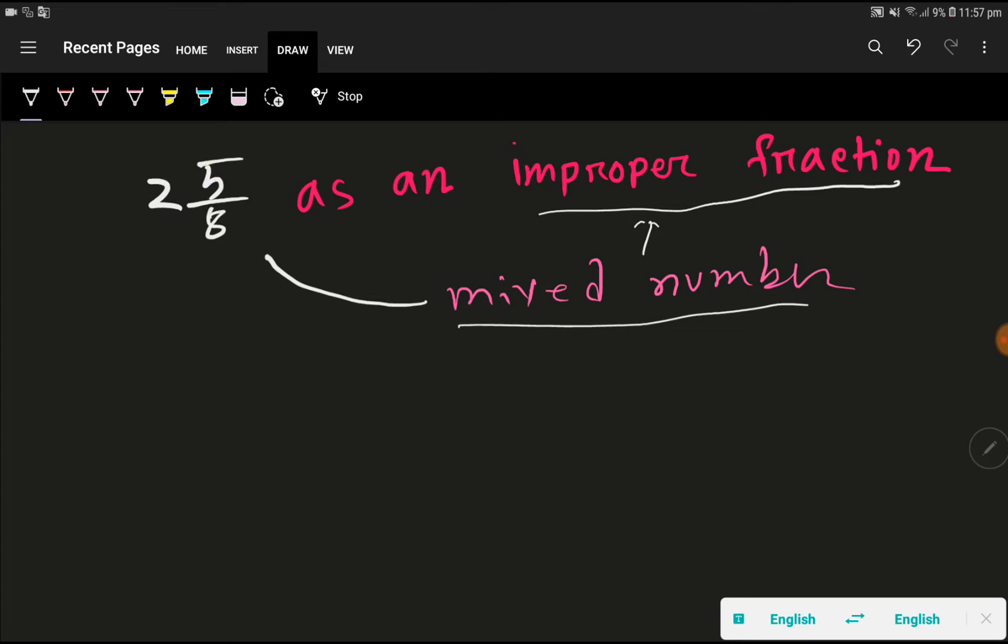To convert this mixed number to an improper fraction, multiply the whole number by the denominator of the fraction, which is 8. Then add the numerator, which is 5. Finally, place the same denominator.